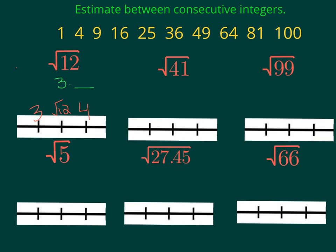Square root of 41: 41 falls in between 36 and 49, so the square root of 41 is going to fall in between the square root of 36 and the square root of 49, which is 6 and 7. On a number line, in between 6 and 7 lies the square root of 41. If you were to evaluate it, you would get 6 point something. What two consecutive integers does square root of 41 lie between? That would be 6 and 7.